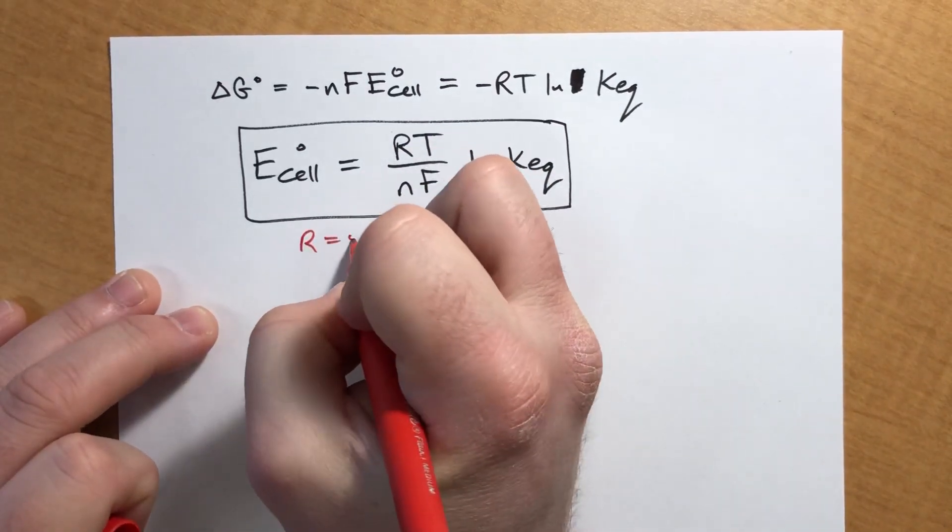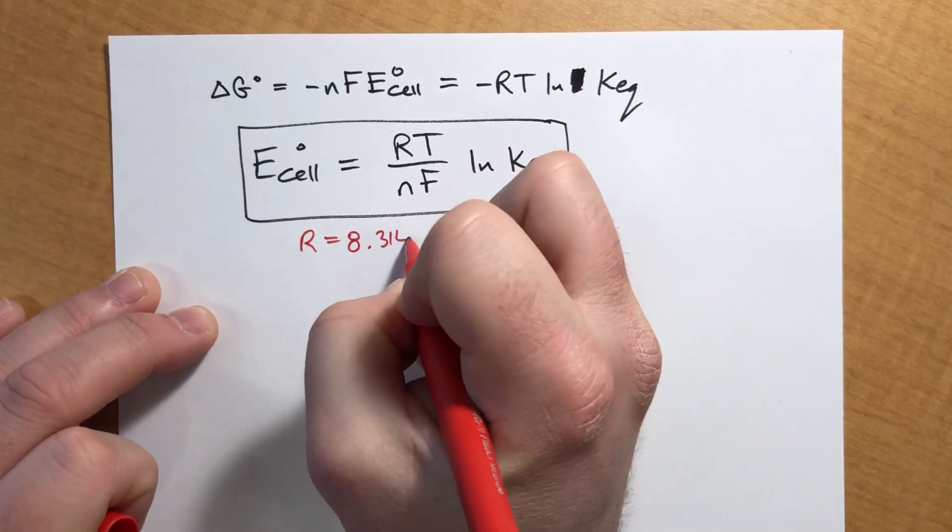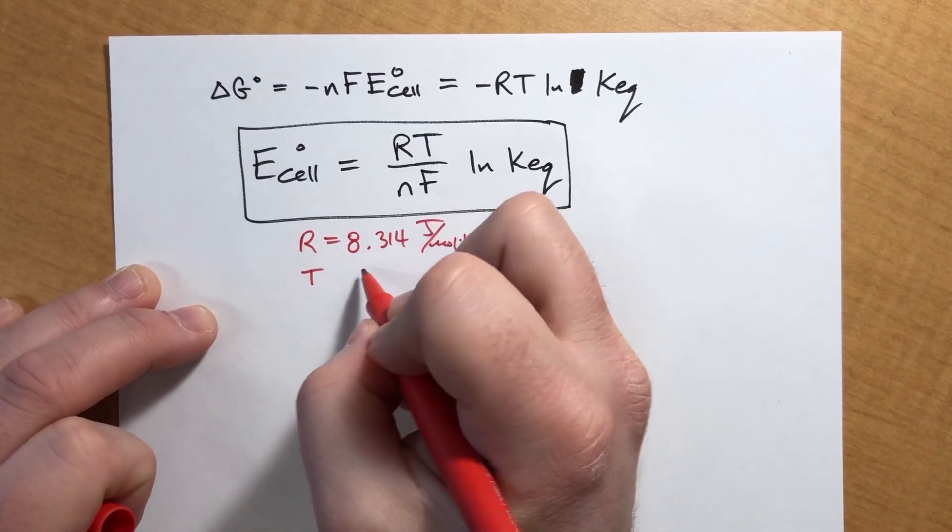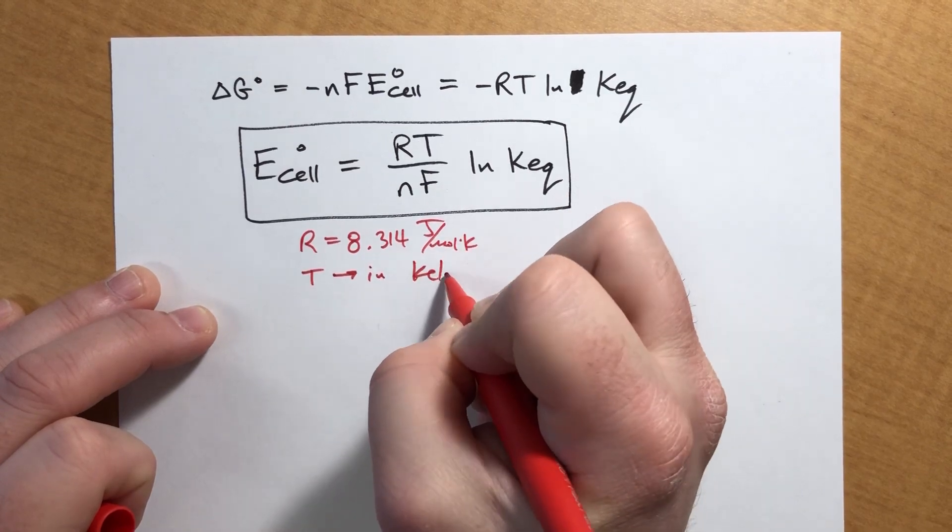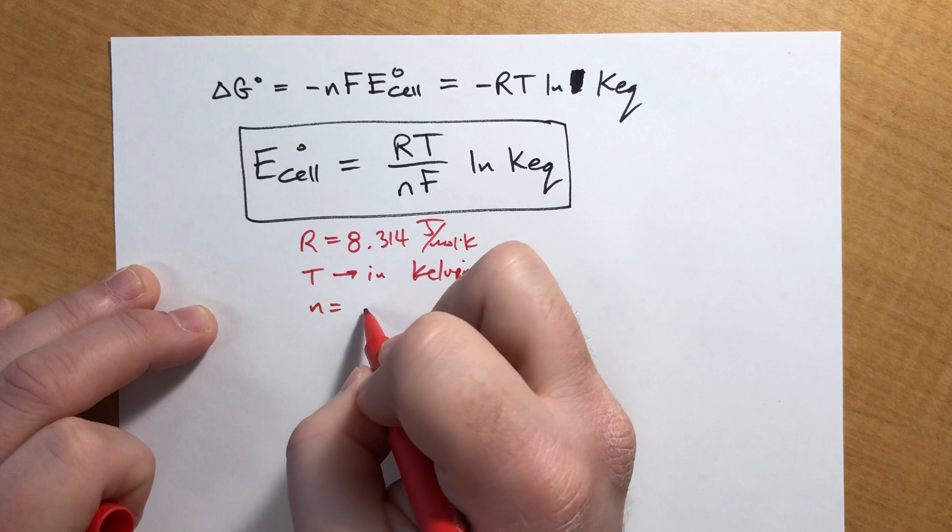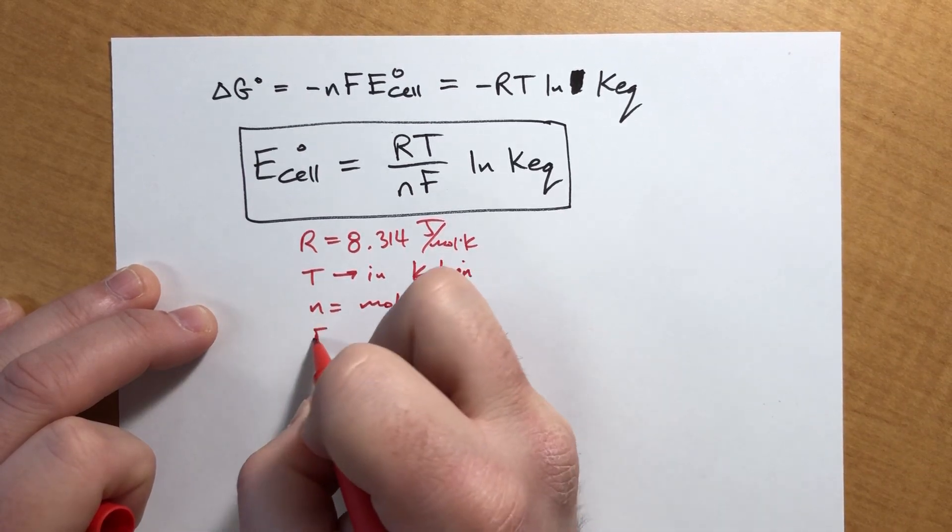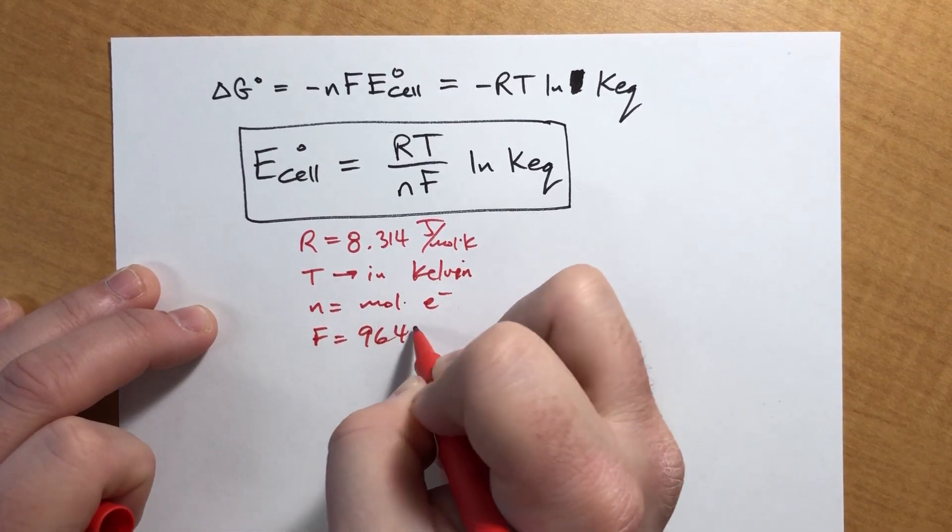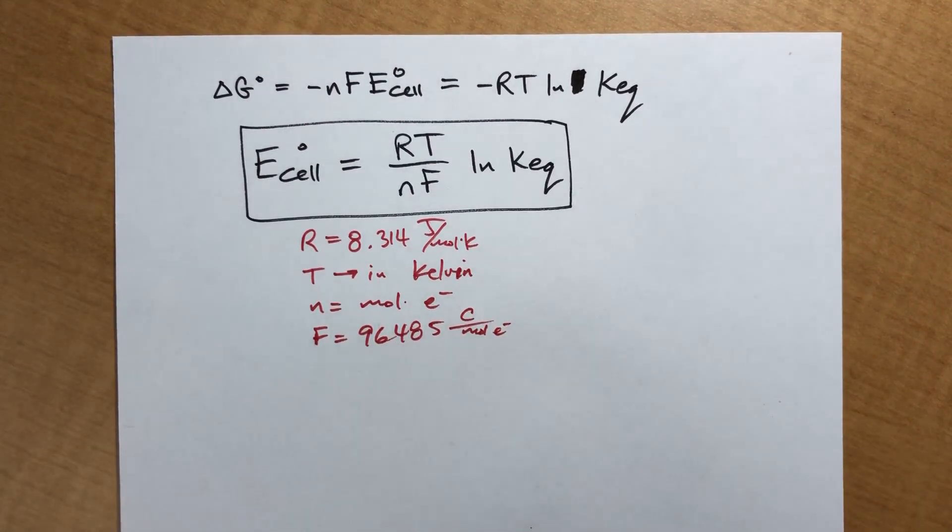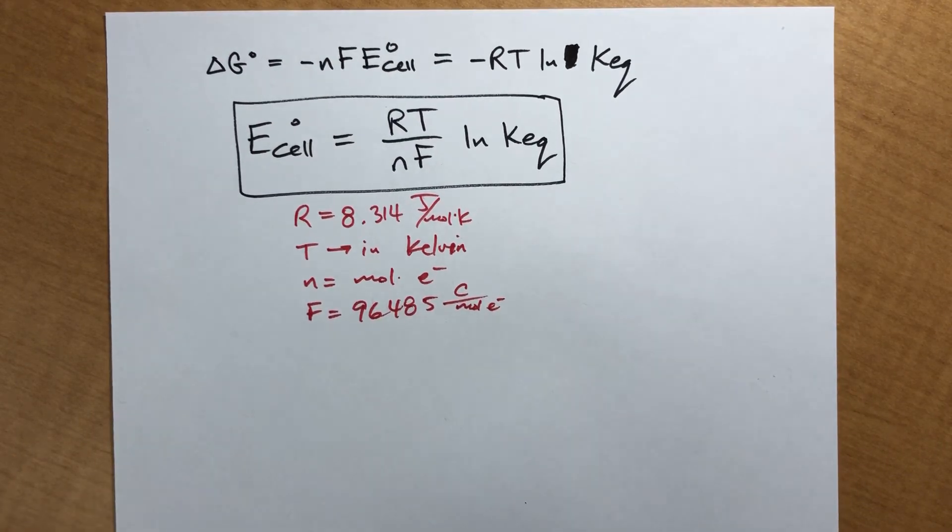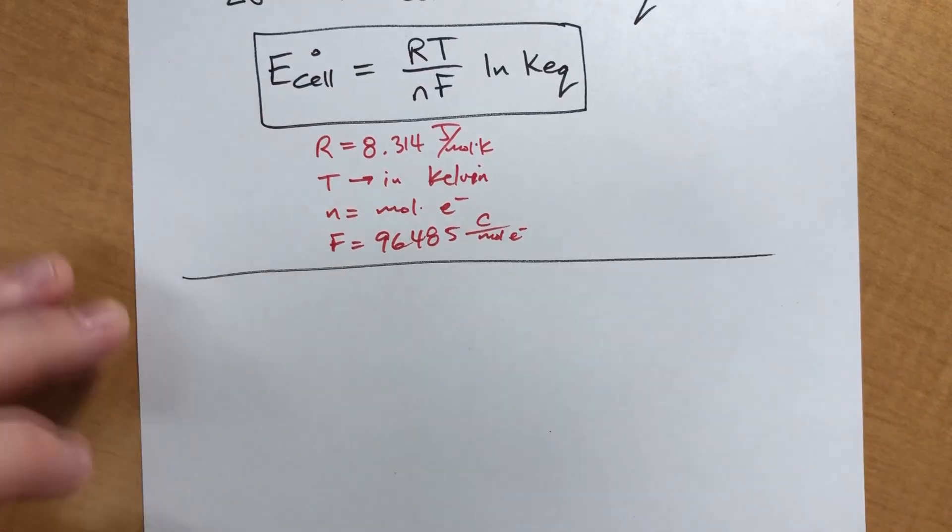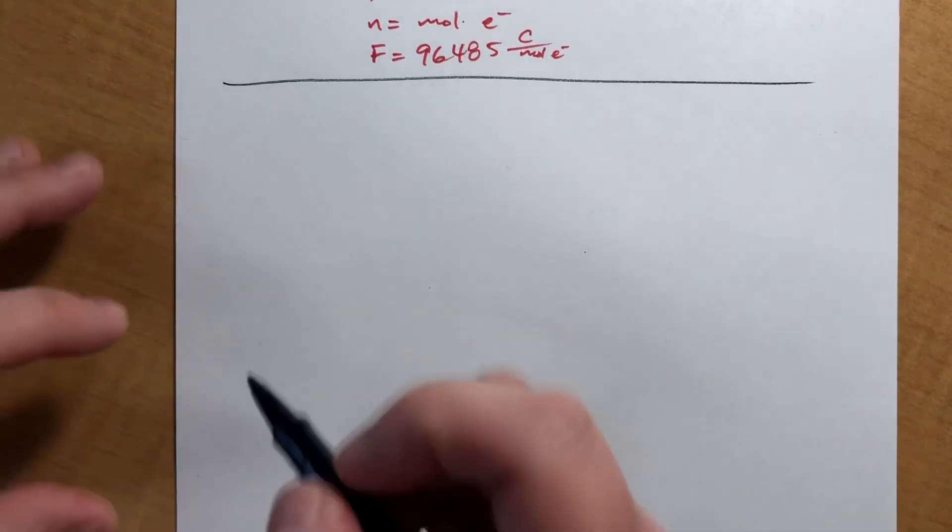So if you have the KEQ for a reaction, you can actually solve for the voltage as long as it's actually a cell diagram. Let's label things. R equals 8.314 joules per mole Kelvin. Temperature just needs to be in Kelvin. N is the number of moles of electrons. And F equals 96,485 coulombs per mole of electrons.